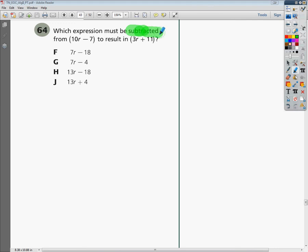The word from is important here. And the reason the word from is important, it means I'm going to start here and it says to result in. To result in means equal. So I'm going to start at 10R minus 7 and then I'm going to get to 3R plus 11. But I've got to cross some sort of mathematical bridge to get there.